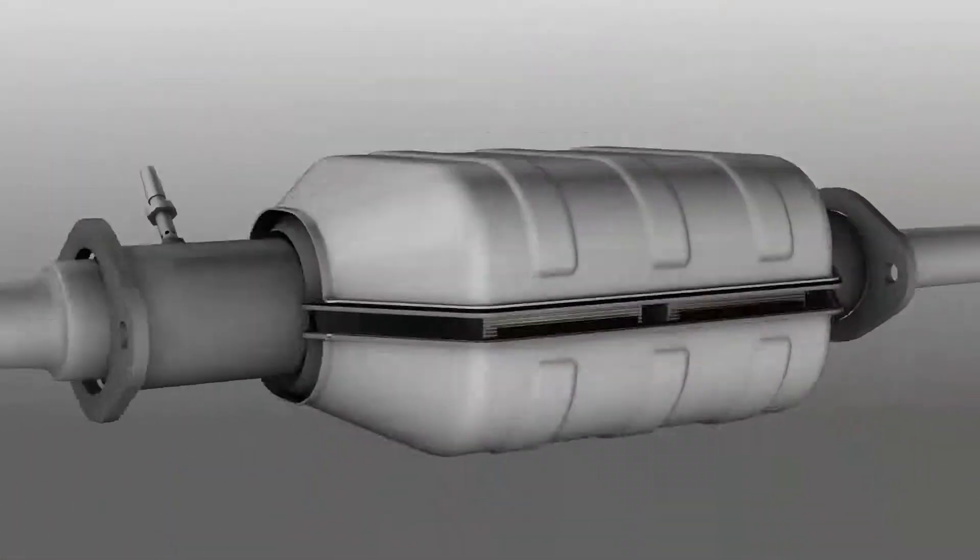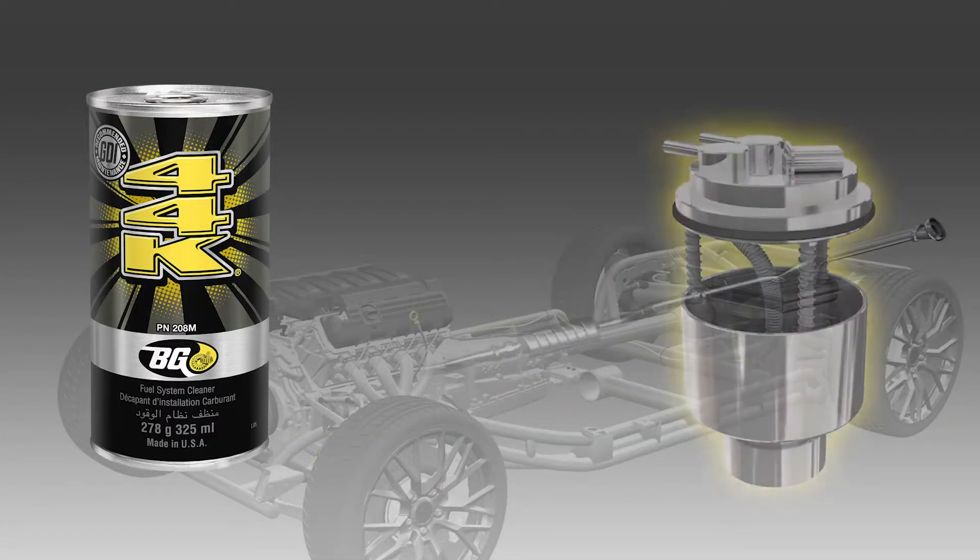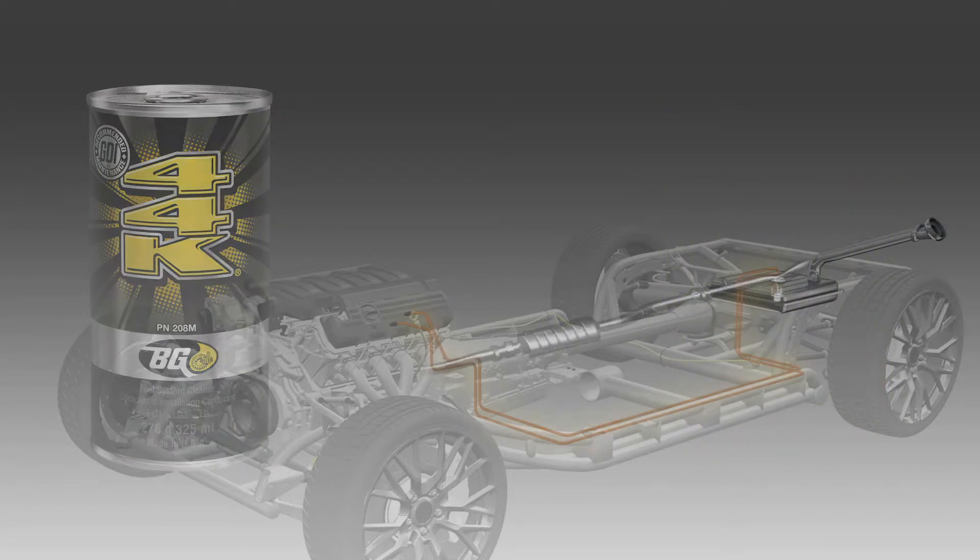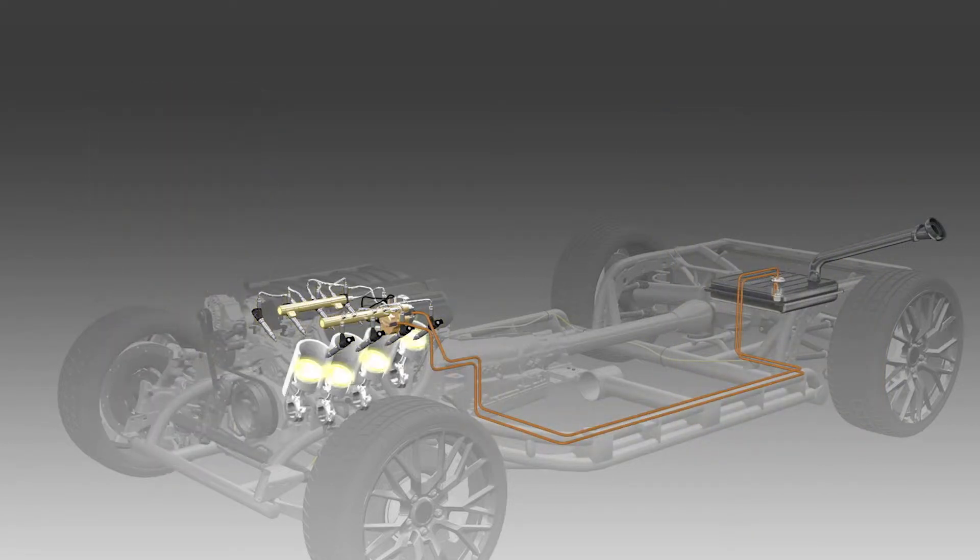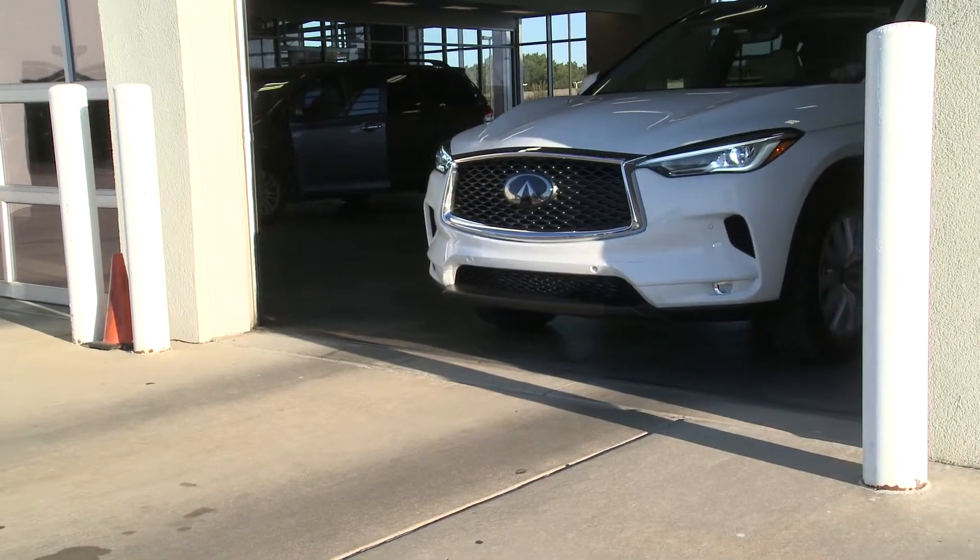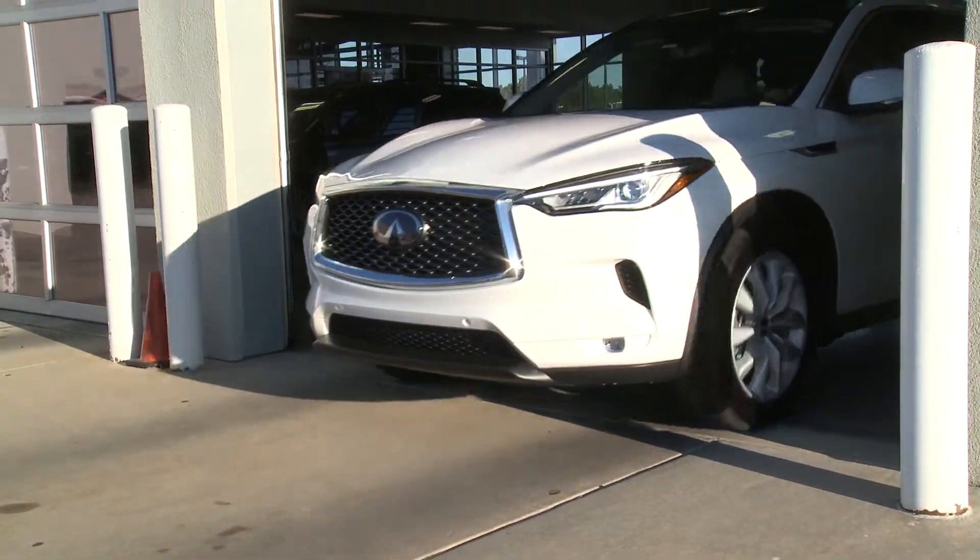Deposits in all these areas are cleaned to like new condition using BG 44K, especially baked on deposits cleaned within the next full tank of fuel between engine use during the cool down process.